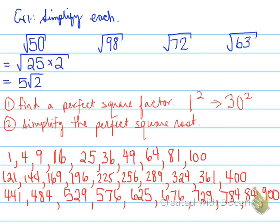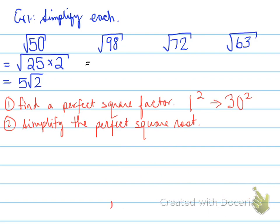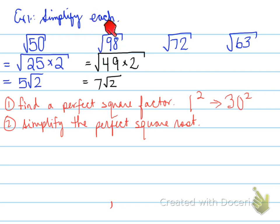Looking back at root 98: we need to find a perfect square factor of 98. Root 98 breaks up as 49 times 2. The square root of 49 is 7, so we're left with root 2 inside. Therefore, root 98 converts to 7 root 2.